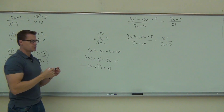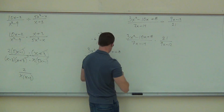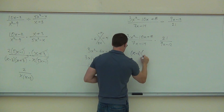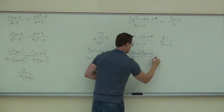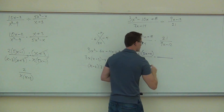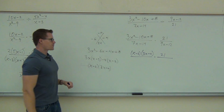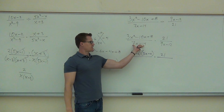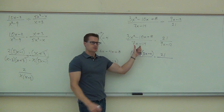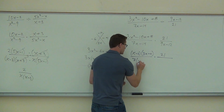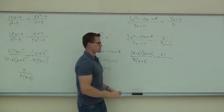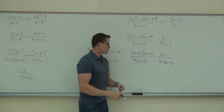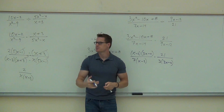We'll continue to factor that, and that right there is our new numerator. I know 21 doesn't factor, but the other two should factor. What factors out of 7x minus 14? We're going to get x minus 2. The other thing we're going to factor out is a 3, and we'll get 3x minus 4. Now we're going to start the good part of simplifying some common factors.